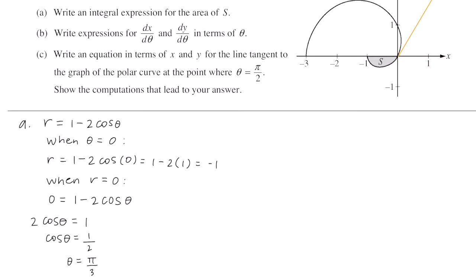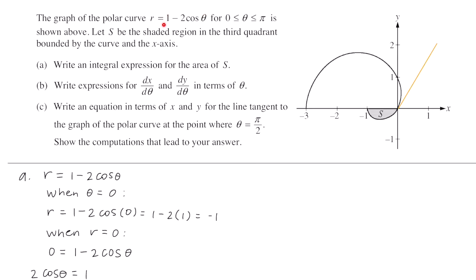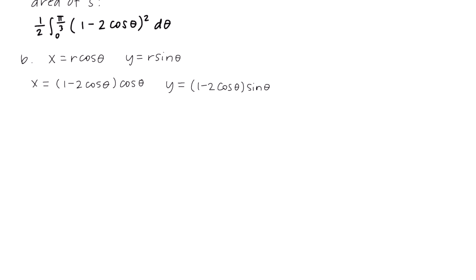Part B says write expressions for dx/dθ and dy/dθ in terms of theta. For polar curves, x equals r times cosine theta and y equals r times sine theta. We substitute r equals 1 minus 2 cosine theta. So x equals (1 minus 2 cosine theta) times cosine theta, and y equals (1 minus 2 cosine theta) times sine theta.